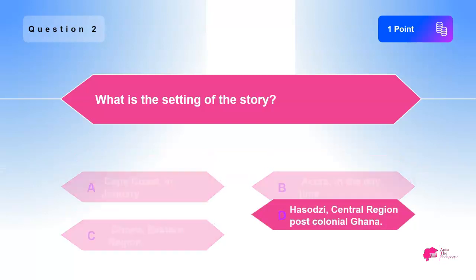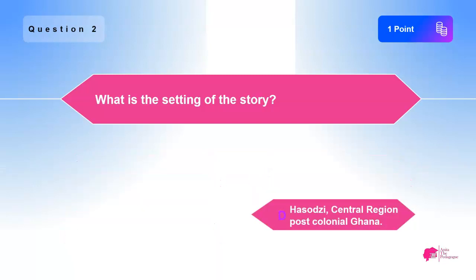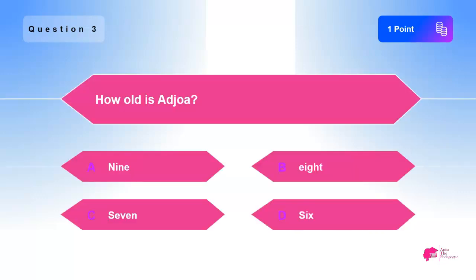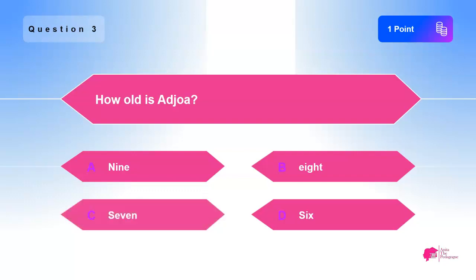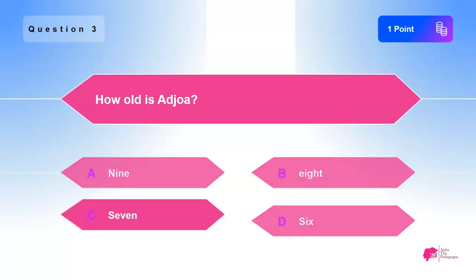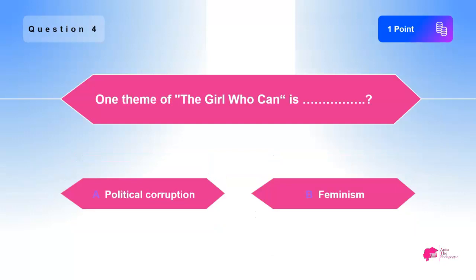The answer is D) Hassoji Central Region, postcolonial Ghana. Question three: How old is Ajwa? A) 9, B) 8, C) 7, D) 6. The answer is C) 7. Question four: One theme of 'The Girl Who Can' is — A) Political corruption, B) Feminism.